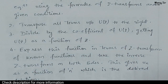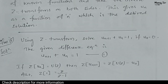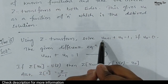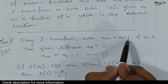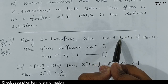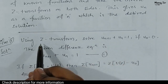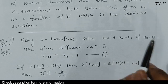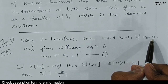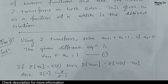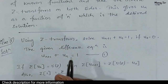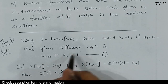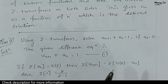Now let us start with the problem. The question says: using Z transform, solve UN+1 + UN = 1. This is the difference equation and we will solve it with the help of Z transform. There is an initial condition given: U(0) = 0. So the given difference equation is UN+1 + UN = 1 — let us call this equation number 1.